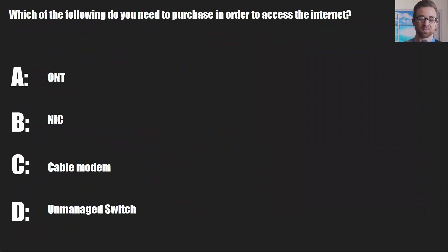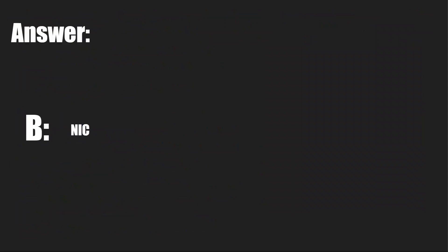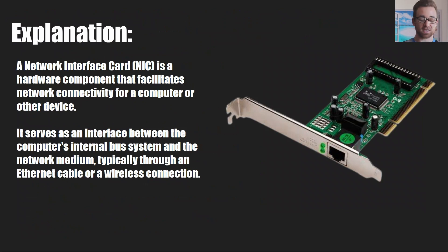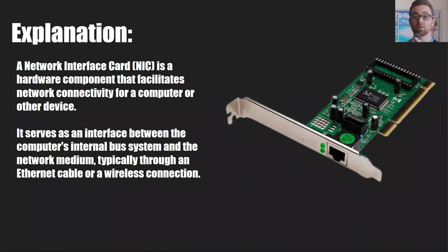Last question: which of the following do you need to purchase in order to access the internet? A, ONT; B, NIC; C, cable modem; or D, unmanaged switch? And the answer is B, NIC. A NIC is a network interface card and essentially allows you to connect to the internet. You might think a cable modem was the answer, but it's not necessary — you could have a DSL modem, you could be using fiber, satellite. There are other ways to connect to the internet, but you can't use any of them unless you have a NIC. A NIC is the only one that is mandatory.